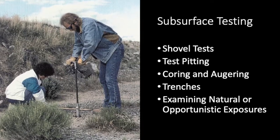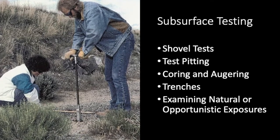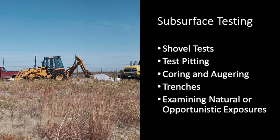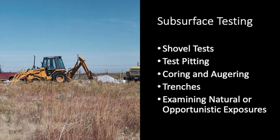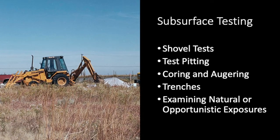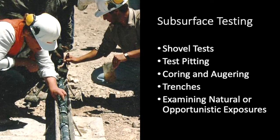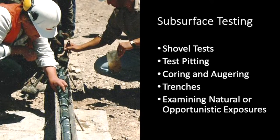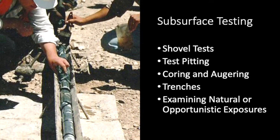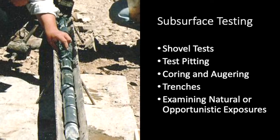Where overlying sediment is too thick for shovel testing to be effective, archaeologists sometimes use coring or augering or even backhoes to penetrate those sediments. Backhoes provide relatively wide exposures and can be used to make systematic parallel transects across a space. Cores and augers have such small diameters that their probability of detecting most kinds of artifacts is very low. However, they can still be effective at detecting buried anthropogenic soils, as well as small bits of charcoal and even micro artifacts that might indicate the presence of a site.